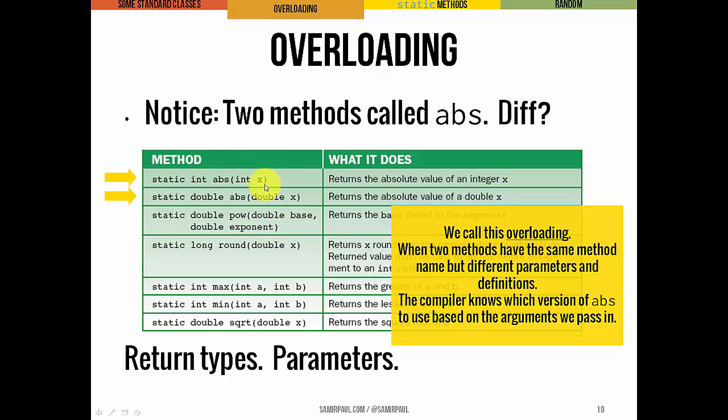The only way we can tell the difference is if the parameter types are different, and the parameter types and the return types don't have to match. Again, we call this overloading methods.